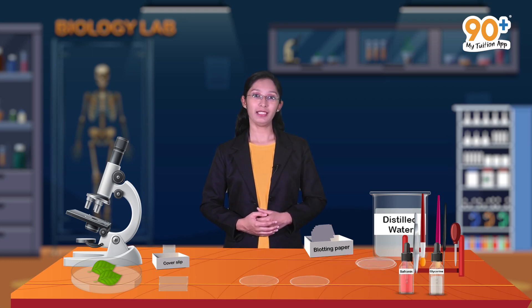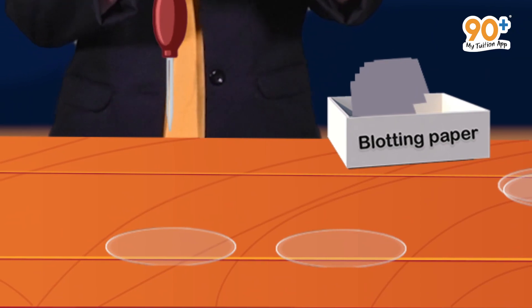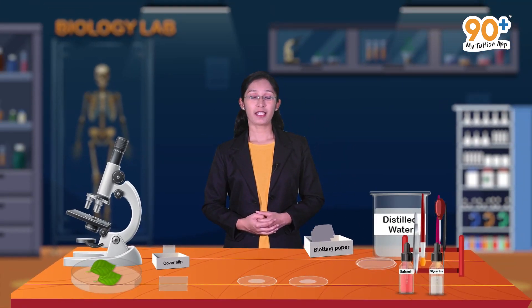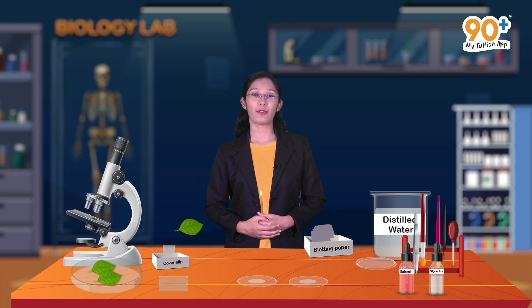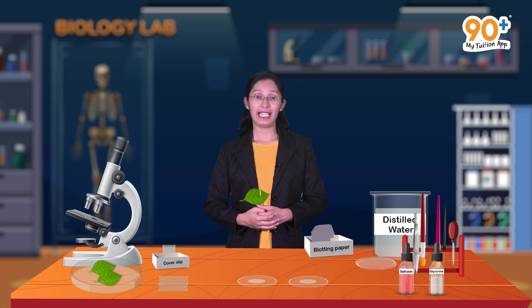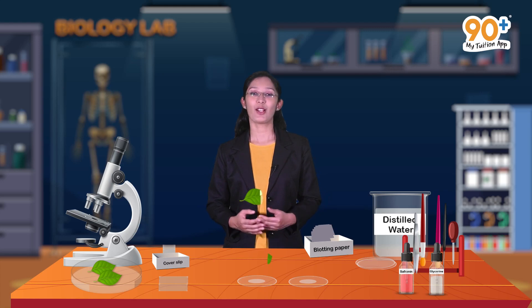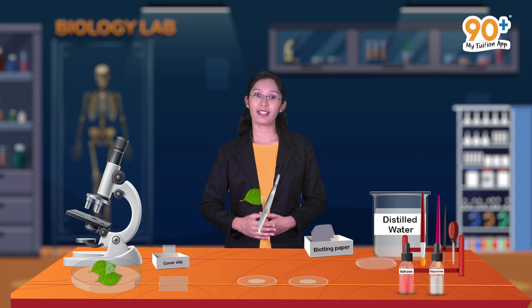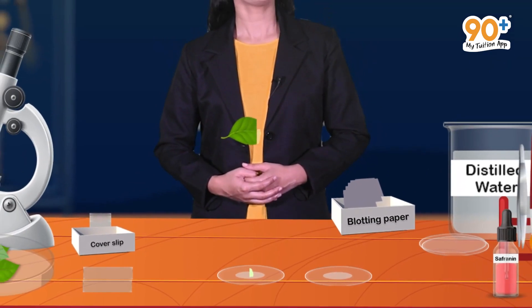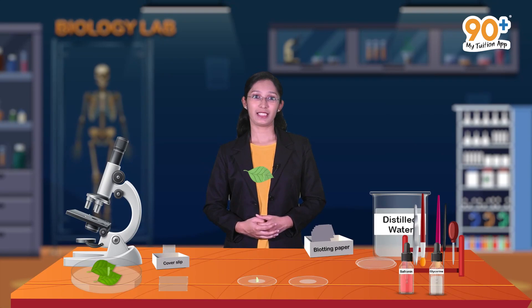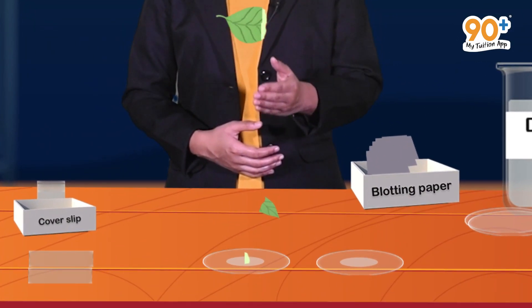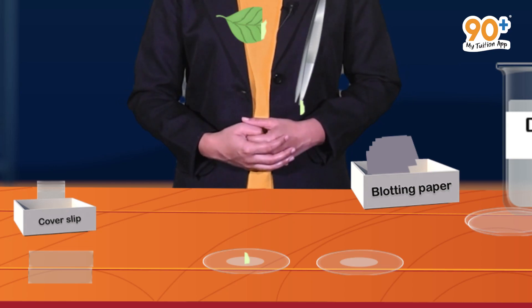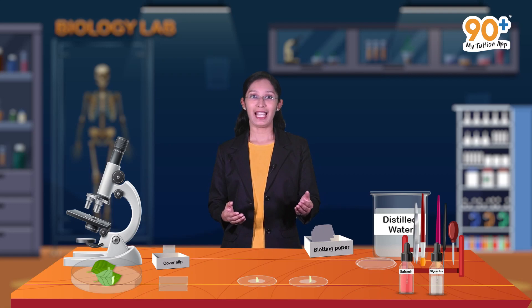Using a dropper, collect a few drops of distilled water onto two watch glasses. We shall carefully take the peel from the upper surface of the petunia leaf — we can tear the peel from the upper surface. Then with the help of forceps, transfer this peel to a watch glass. We can also take the peel from the lower surface by tearing it, then transfer it to the second watch glass using forceps. Now we have obtained the upper and lower surface peels in two separate watch glasses.